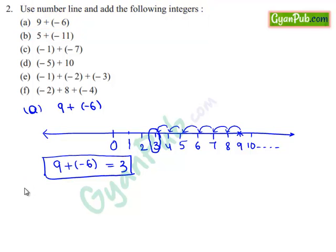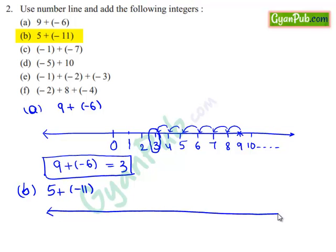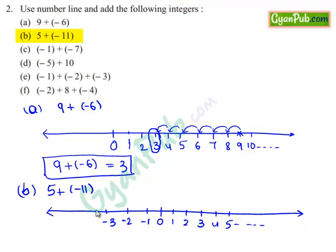Similarly, take down part B: 5 plus minus 11. To add 5 and minus 11, let us draw a number line and mark the integers on it: 0, 1, 2, 3, 4, 5 and so on. First, mark plus 5 on this number line.